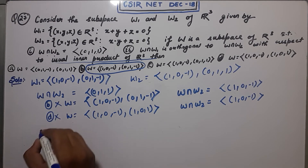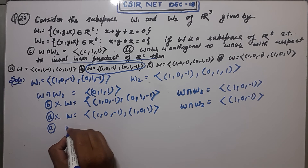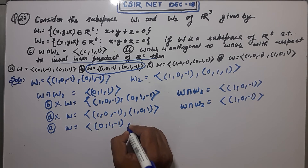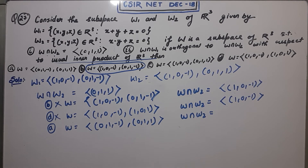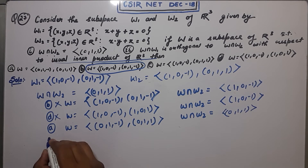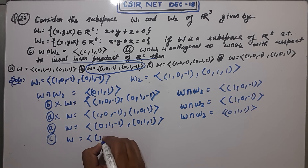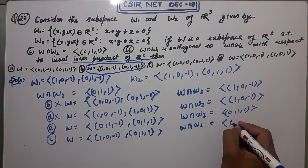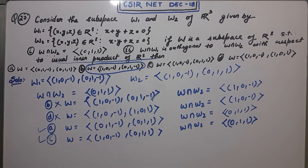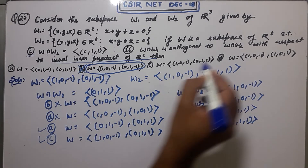For option A, if you take W as the span of (0,1,−1) and (0,1,1), then W intersection W2 is the span of (0,1,1) — so you cannot discard option A. For option C, taking W as that span also gives W intersection W2 as the span of (0,1,1). So both A and C satisfy condition one, and B and D are false.